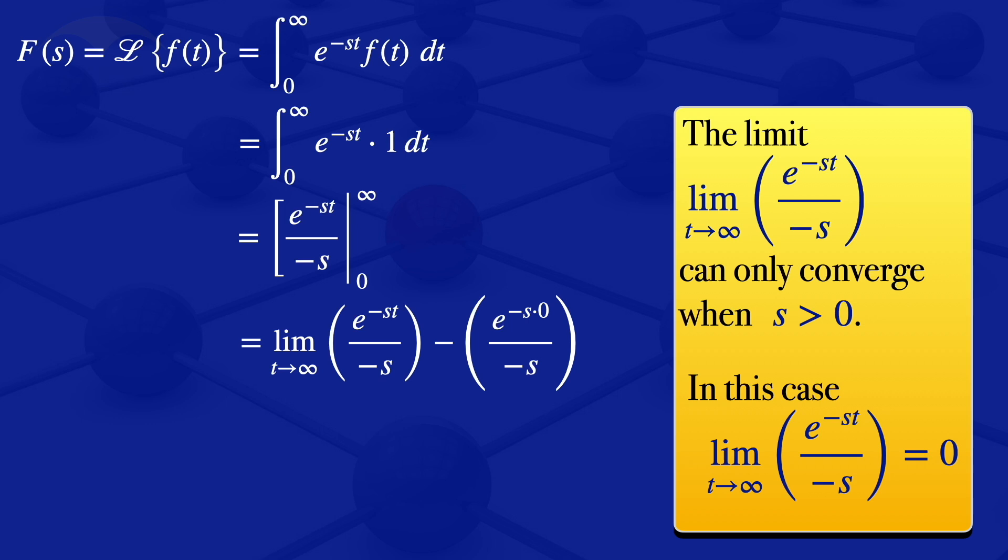Just because the limit as t approaches infinity will approach 0. So we have that part where we have the upper limit, it will give us 0. And where we have the lower limit of 0, e^(-s×0) gives us 1.